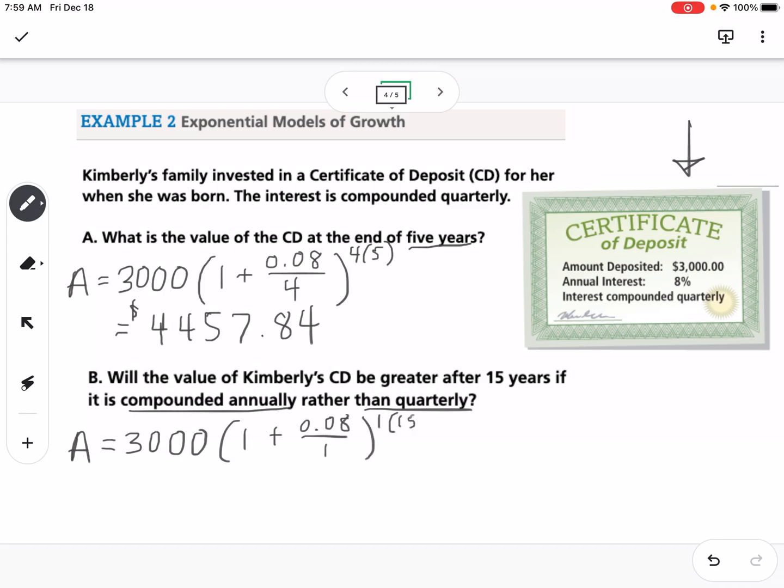And then I'm going to set up my other one, which is quarterly. So 3,000(1 + 0.08/4)^(4×15). So what I get is with the annually calculation, I get $9,516.51, and with quarterly, I get $9,843.09.